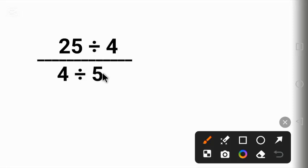All right, so having said that, let's solve it together. 25 divided by 4 can be written as 25 over 4. This line is a division sign. 4 divided by 5 can be written as 4 over 5.